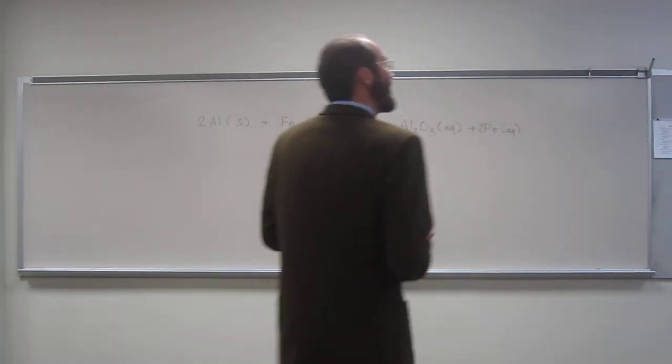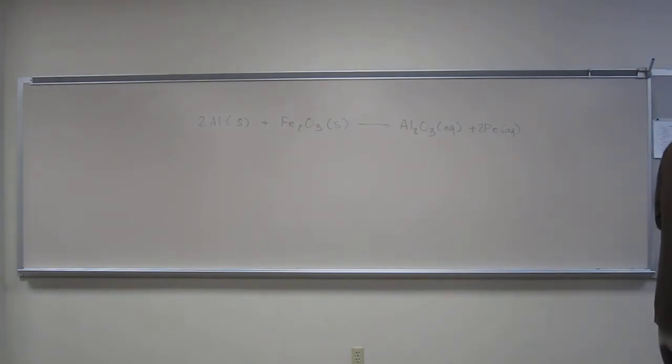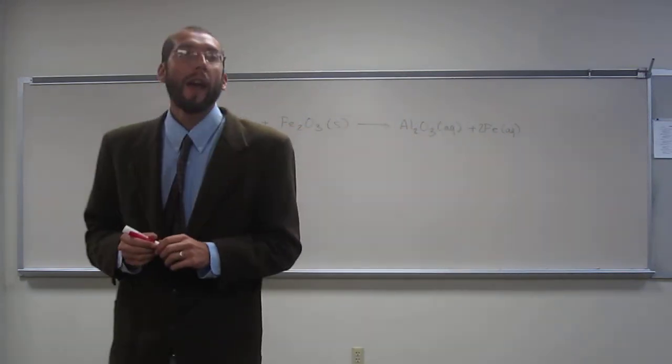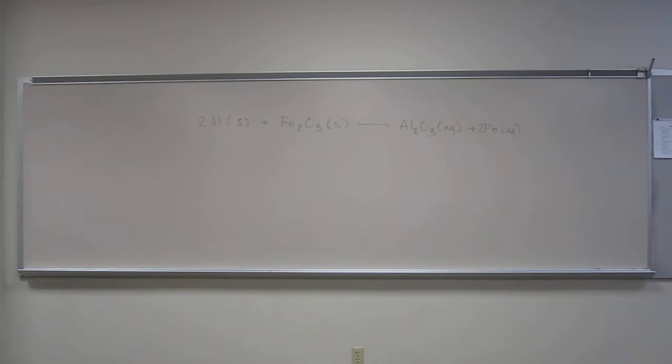Anyways, so let's do an actual yield problem this time. So let's say we started with, I don't know, 10 grams of iron oxide, iron 3 oxide. If we got a 35% reaction yield, how many grams of iron would we have made? Is that okay?